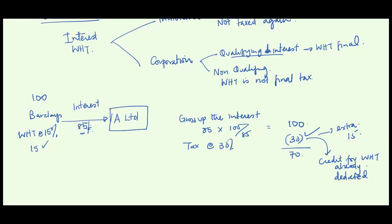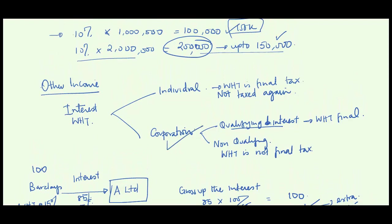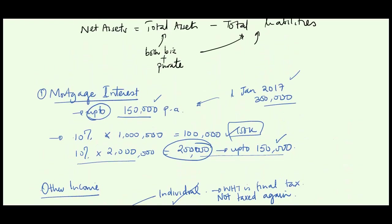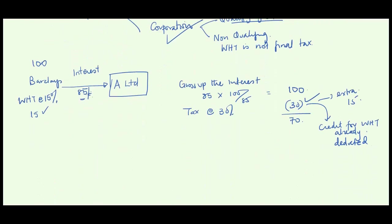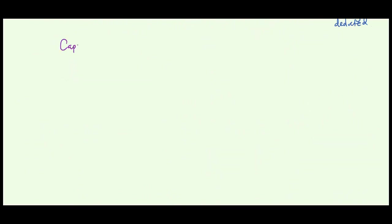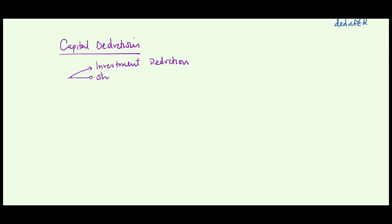This is only applicable when dealing with corporations. If you're dealing with individuals and an individual has received interest, don't subject it to further tax. But if dealing with a corporation, in most cases you'll have to subject it to further tax and then give credit for withholding tax already deducted. Let's now look at something else that poses challenges — capital deductions. The examiner can bring various tricks your way when looking at capital deductions.